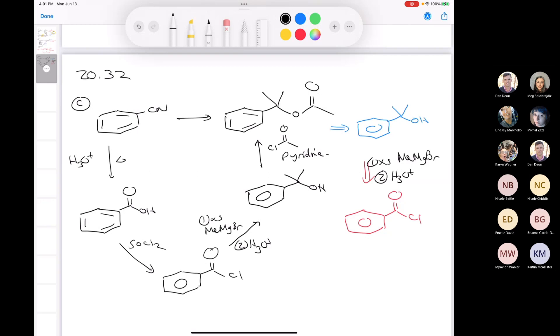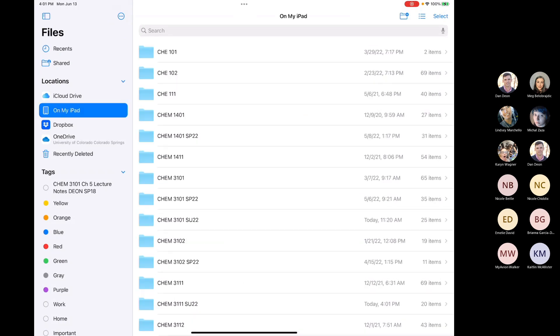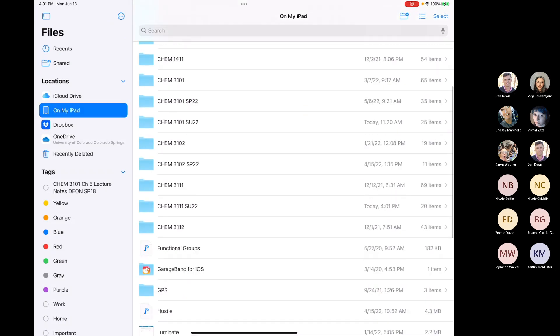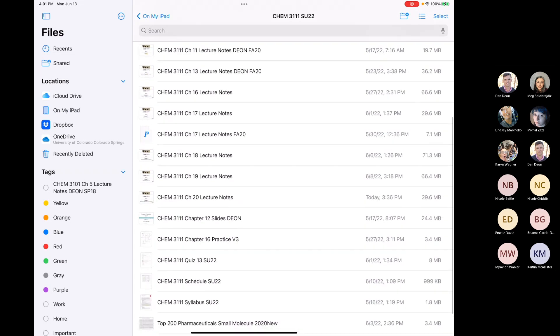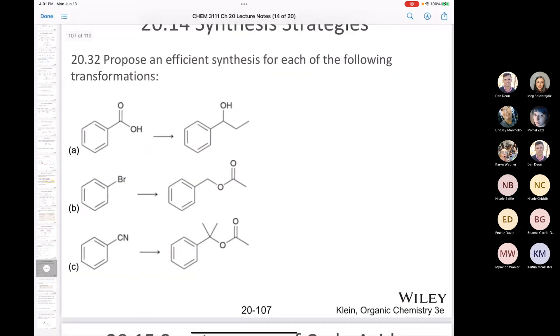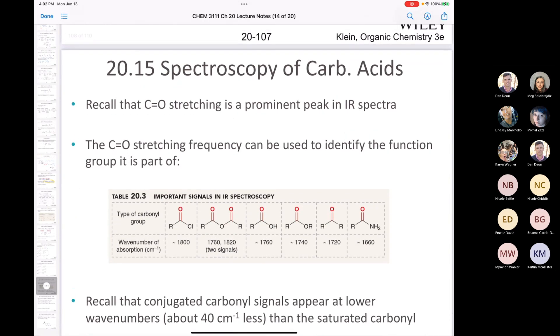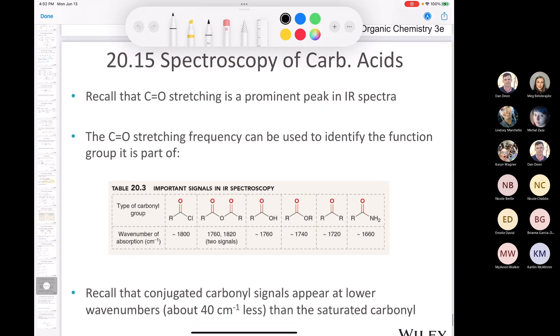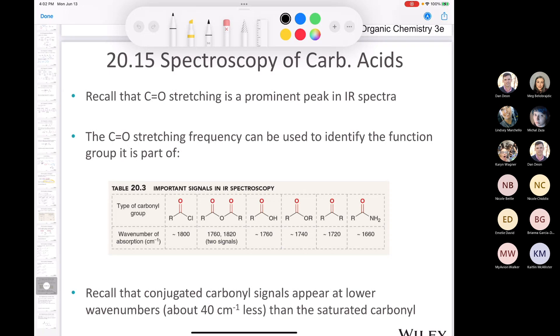So, the very last section of the chapter are things that we would have covered in Organic Chemistry 1. So, I'll just show you quickly here. You scroll down way at the end. The very last section just deals with the spectroscopy of carboxylic acids. And this is something that if you took the Organic Chemistry 1 lab at UCCS, we would have looked at a lot of these functional groups in detail. For example, the wave number for the stretching frequency of the carbonyl group of an acid chloride is higher than that of an anhydride. And then it goes down to carboxylic acid, ester, ketone, amide.